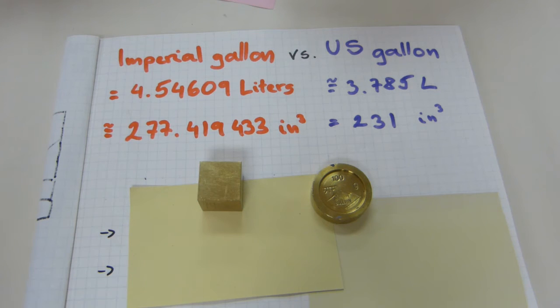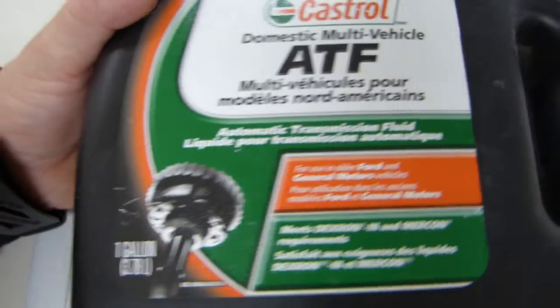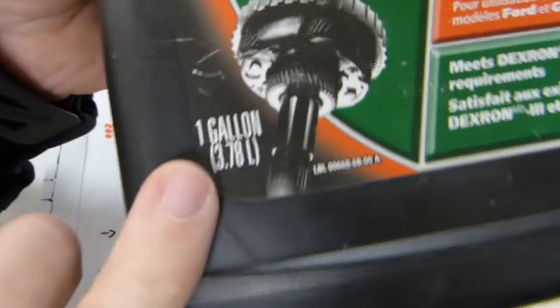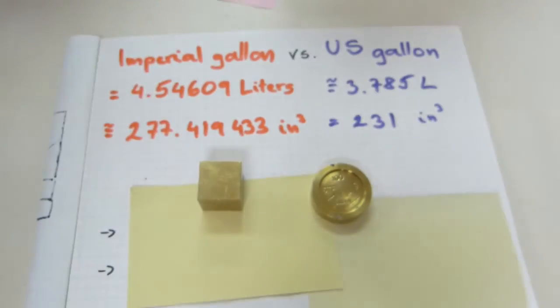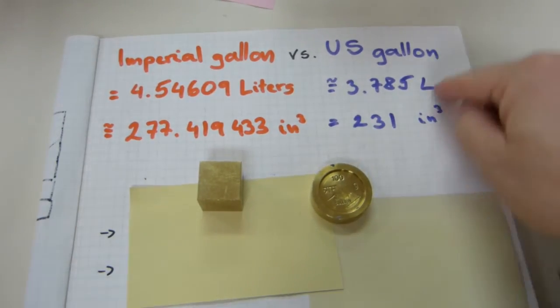Where would the fun be in that if there was only one kind? We have two different kinds with two different sizes and products, whether it's ketchup, milk, cooking oil, or in case of this automatic transmission fluid, they get labeled with the gallons differently. This is one gallon, 3.78 liters, is this kind of gallon on the right here.